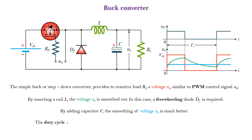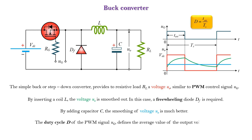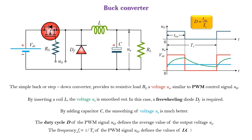The duty cycle D of the PWM signal VG defines the average value of the output voltage VO. The frequency FS of the PWM signal VG defines the values of the LC filter.